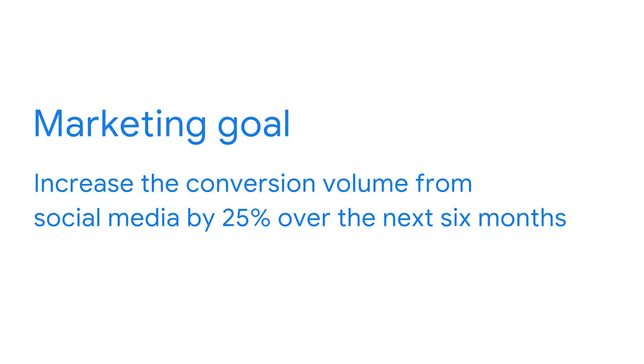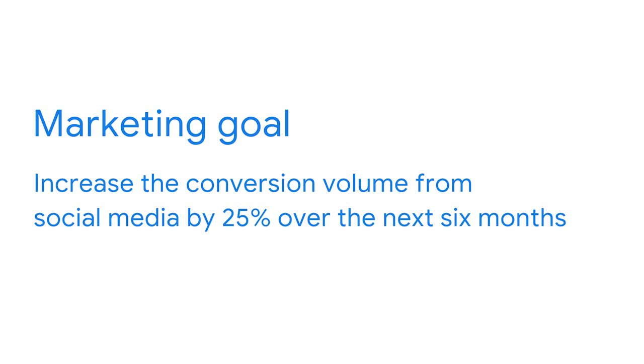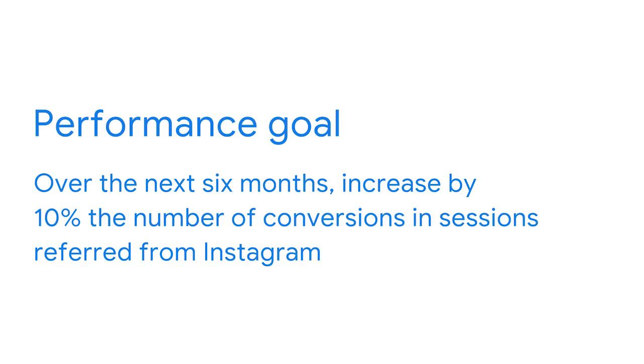In the last example, the marketing goal is to increase the conversion volume from social media by 25% over the next six months. Conversion volume is the total number of conversions, or total monetary value, of conversions over a period of time. A conversion happens when a potential customer takes a desired action. If you're measuring conversion volume by the total number of conversions, you can set a performance goal for an individual channel. For example, over the next six months, you could try to increase by 10% the number of conversions in sessions referred from Instagram. If you're measuring conversion volume as a monetary value, you'll need to assign monetary values to different types of conversions, such as leads or purchases. This can normally be set up and monitored in tools like Google Ads.